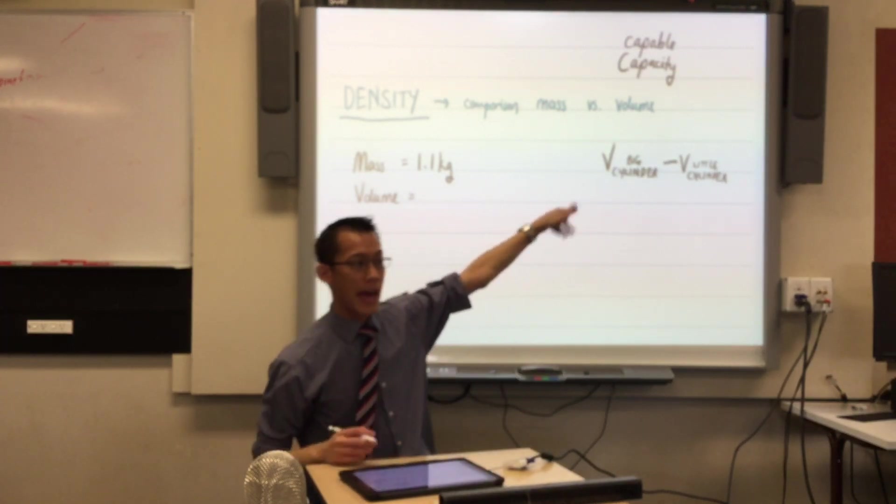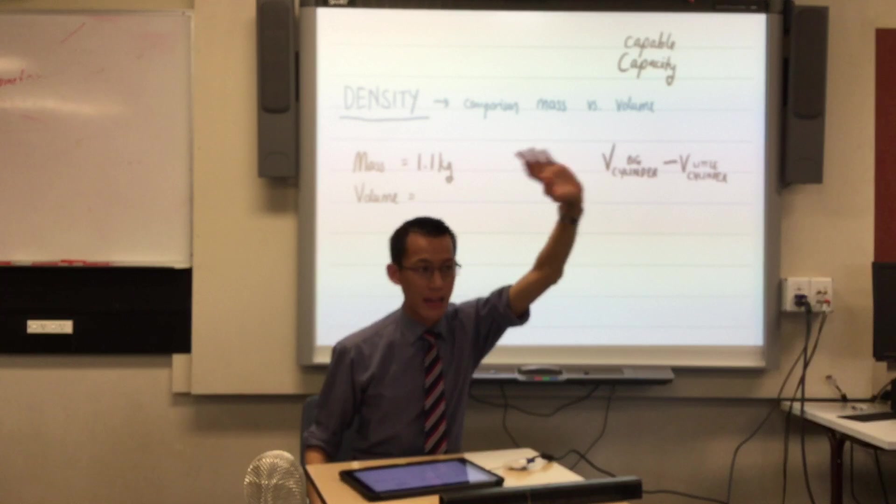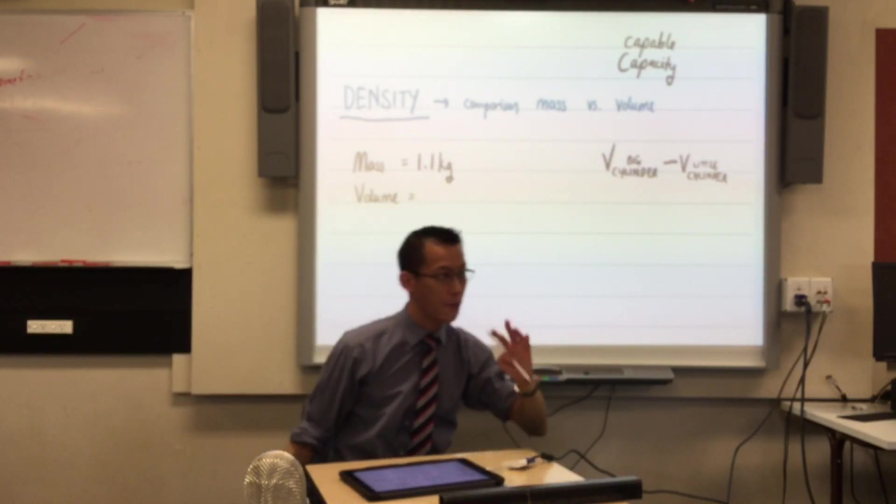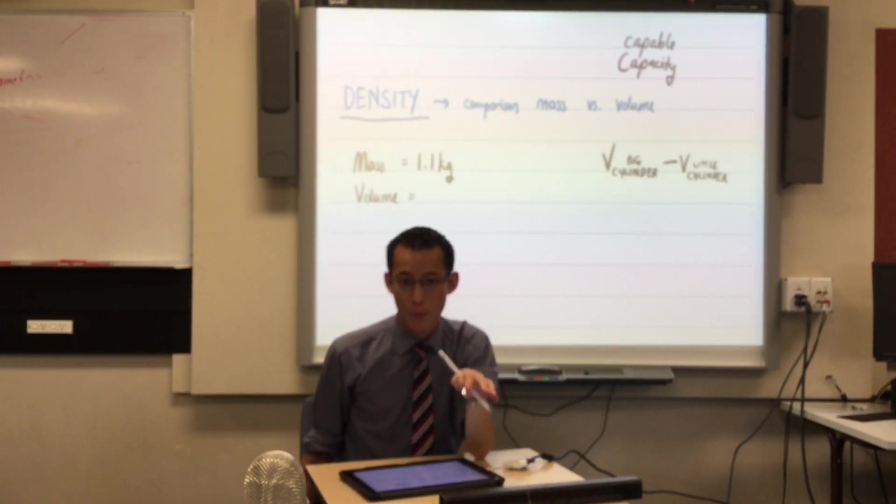All right, so here's one method. Hands up, who had that as their method? Hands up straight? Yeah. Okay, fantastic, that's good. Now, I think that's a good first way to go, but mathematicians are always searching for multiple ways to solve problems.